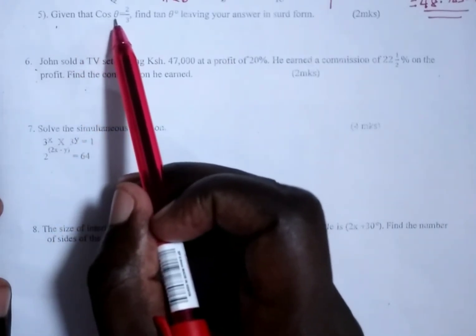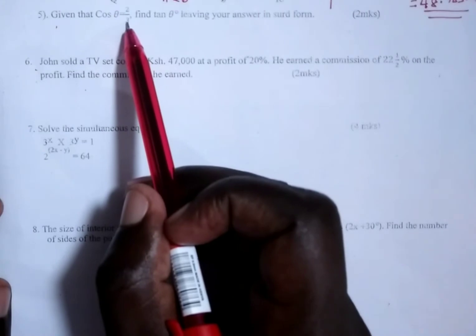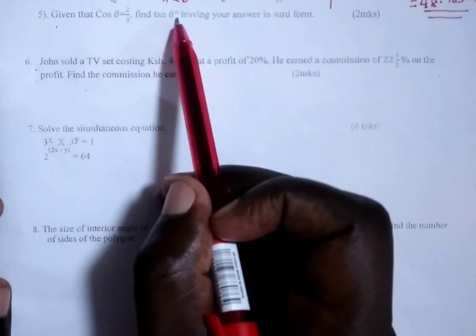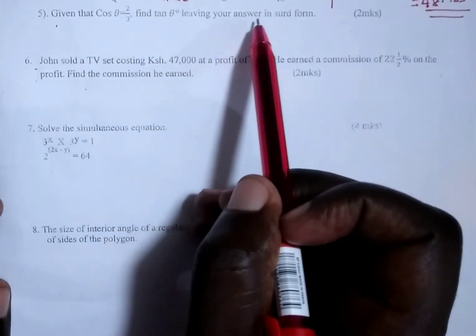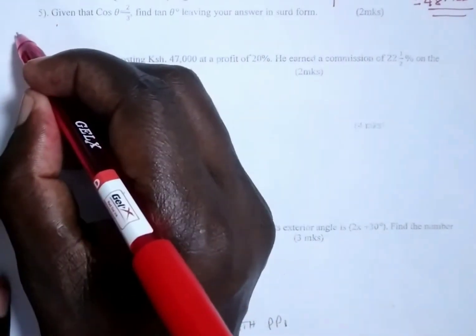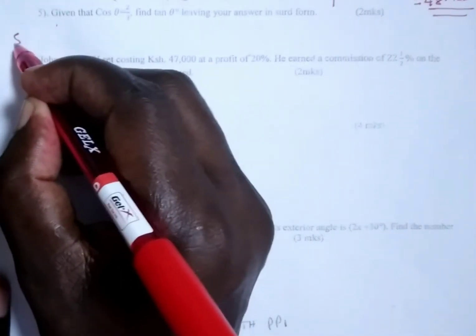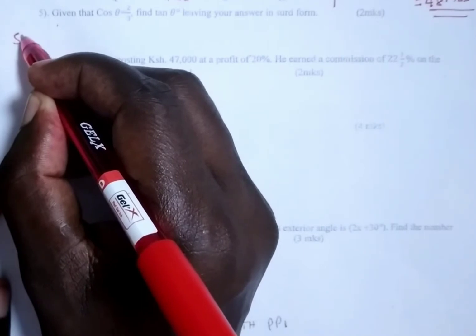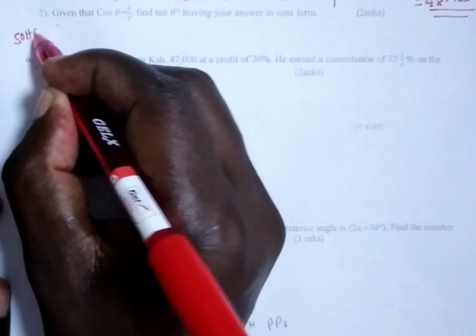Given that cos θ is 2/3, find tan θ leaving your answer in surd form. This is trigonometry where we deal with the three trigonometric ratios using SOHCAHTOA.